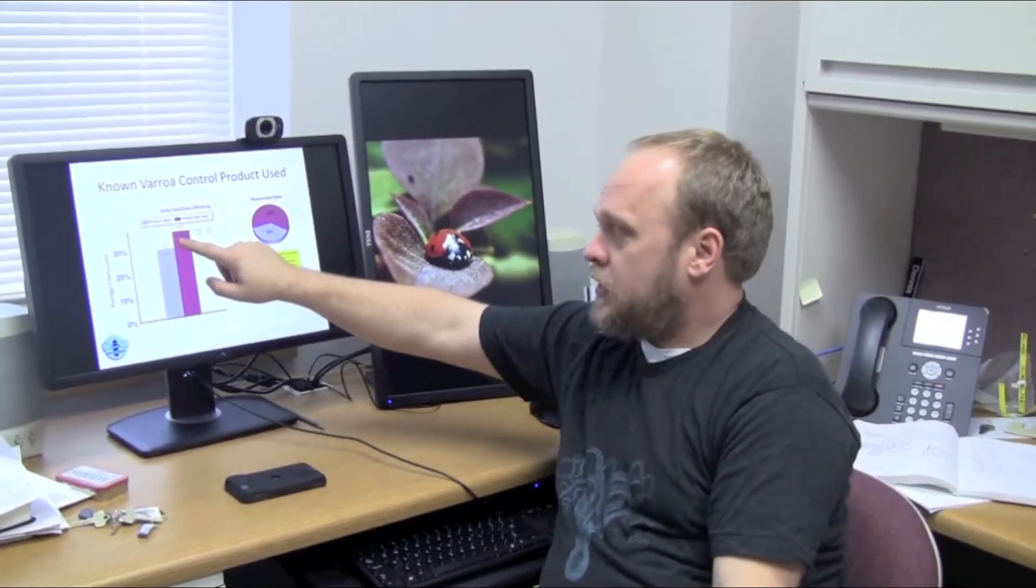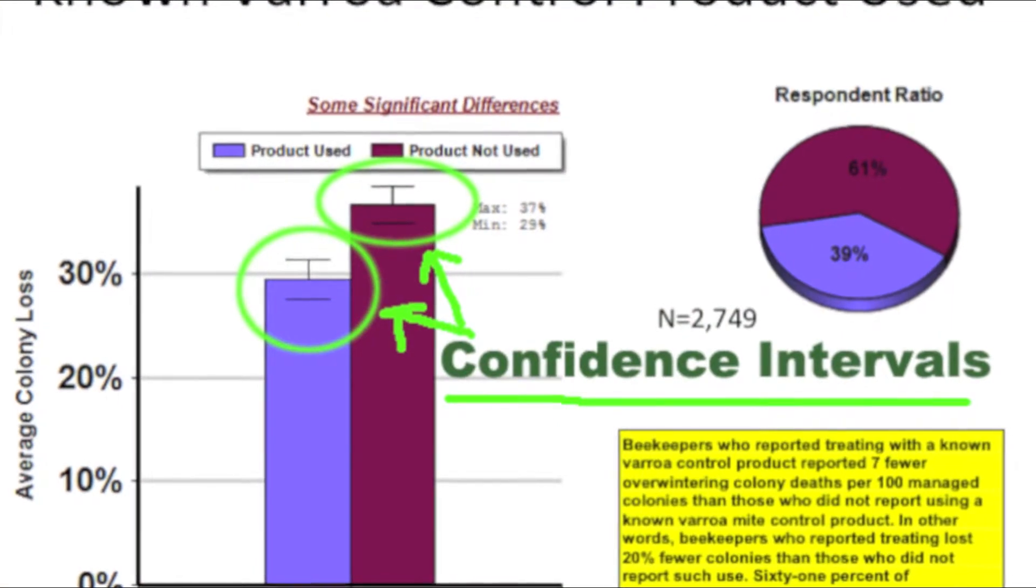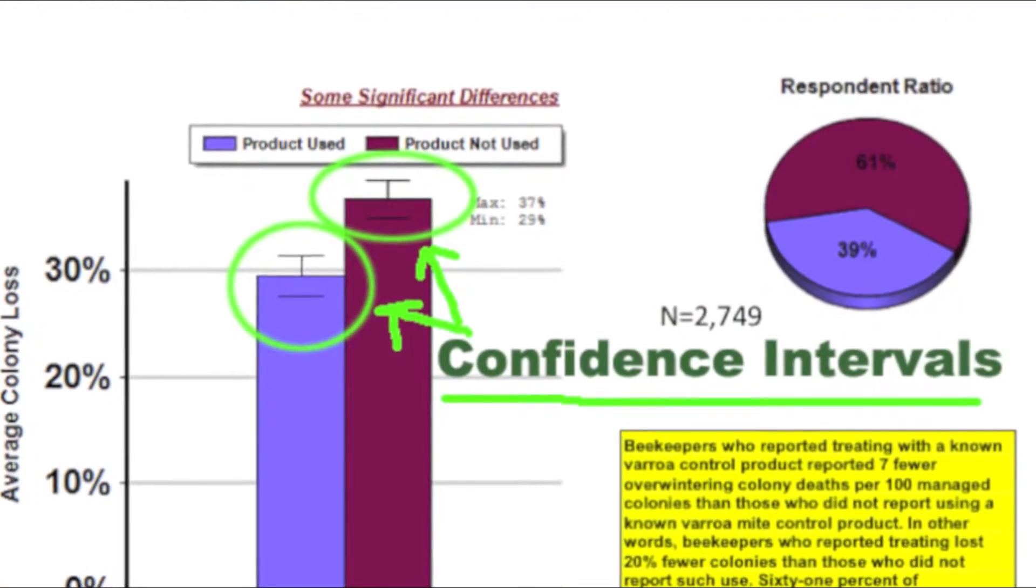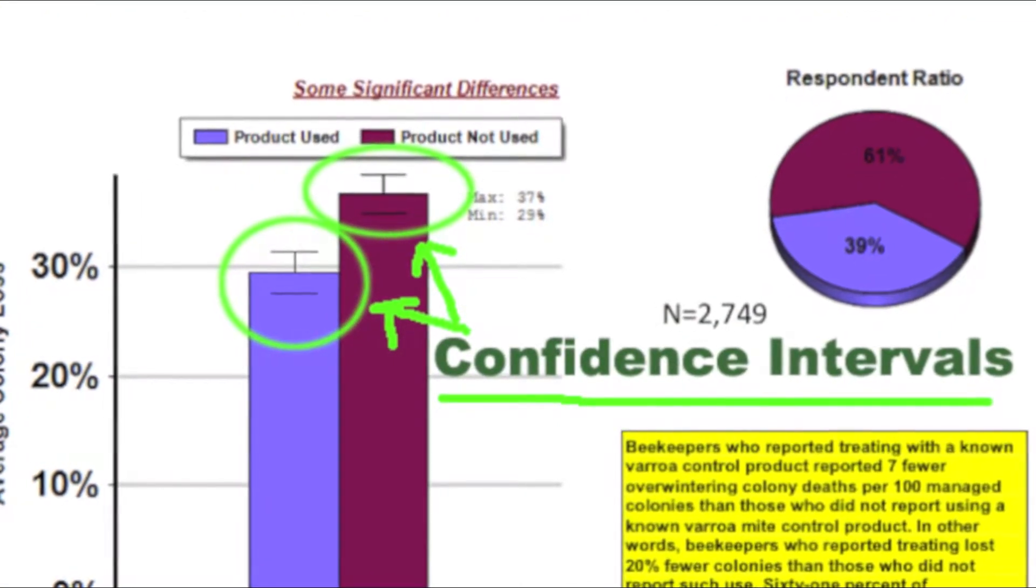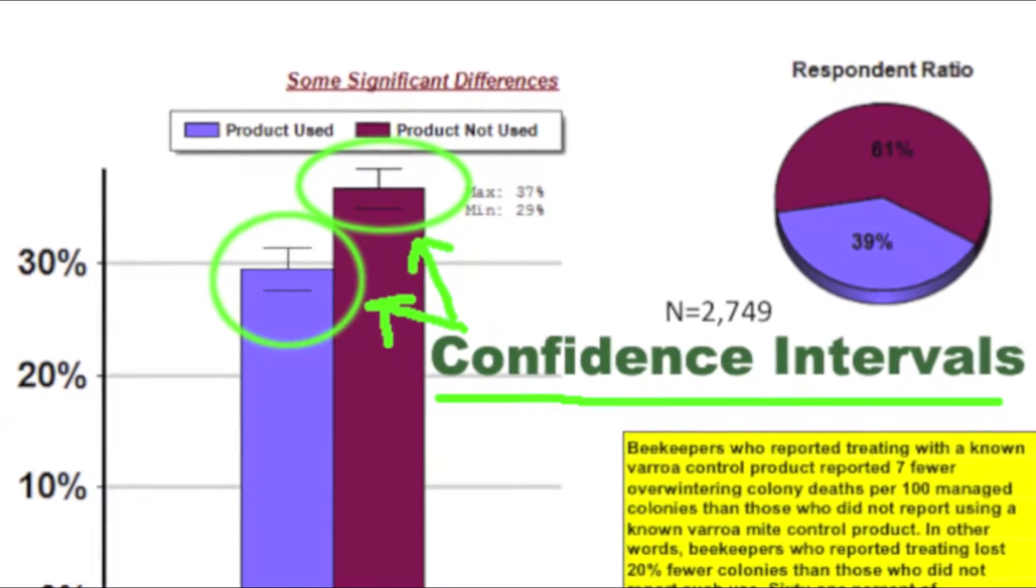At the top of each bar is the confidence interval, or the 95% confidence interval. That's the region that we have 95% confidence that the average truly falls. So if we were to sample that population 100 times, 95% of the time the average would fall within that range.